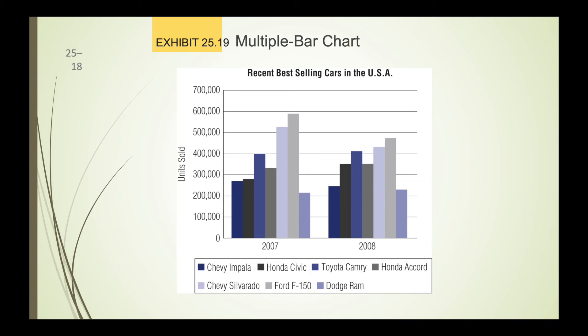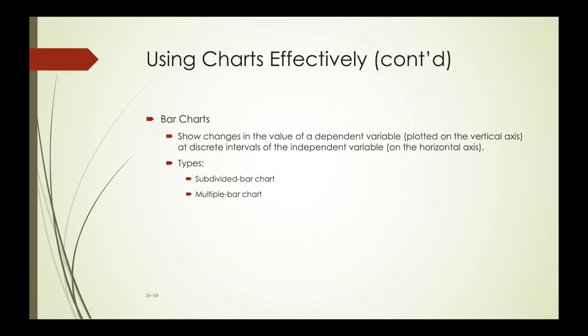The multiple bar chart is again comparing variables — from 2007 to 2008 these are the best-selling cars. At the bottom you see the legend, which shows the individual variables that make up the whole composite. You can compare how cars were selling based on make from 2007 to 2008. Bar charts show changes in the value of a dependent variable plotted on the vertical axis at discrete intervals of the independent variable on the horizontal axis, and you have subdivided and multiple bar chart variations.